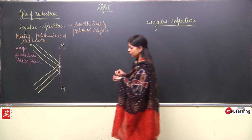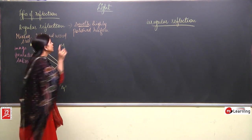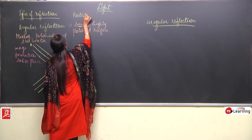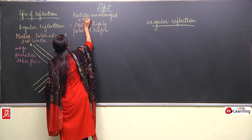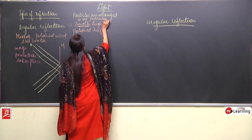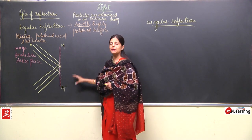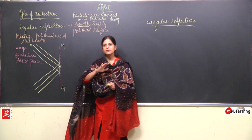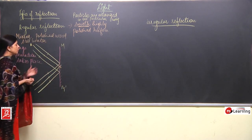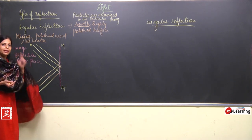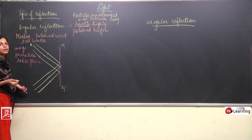The same happens with highly polished smooth surfaces like shiny wooden furniture. At a smooth surface, the particles are arranged in a particular way — they are not spread haphazardly. When the beam of rays falls on such a reflecting surface, it gets reflected in one particular direction and in a parallel way.